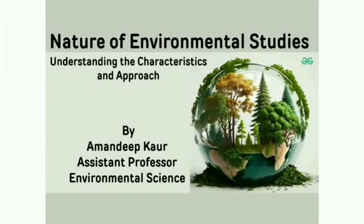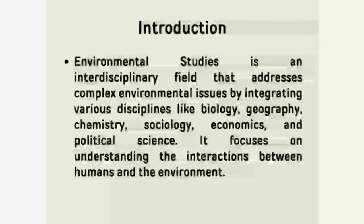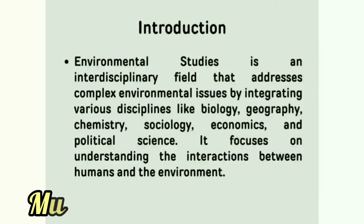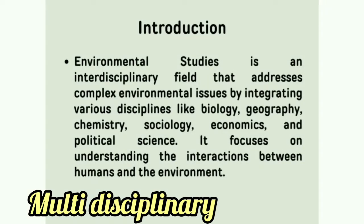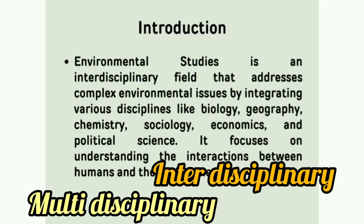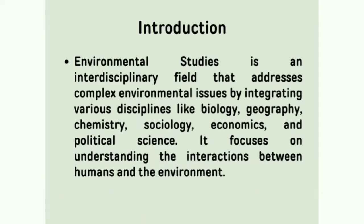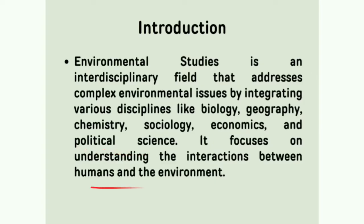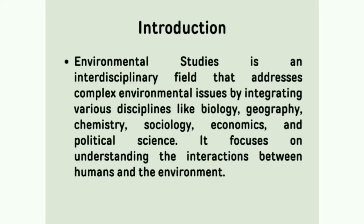The nature of environmental science is multidisciplinary and interdisciplinary — it addresses complex environmental issues by integrating various disciplines like biology, geography, chemistry, sociology, economics and political science. It focuses on understanding the interaction between humans and the environment. The nature of environmental science is complex and multidisciplinary.